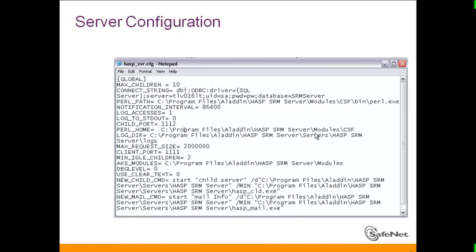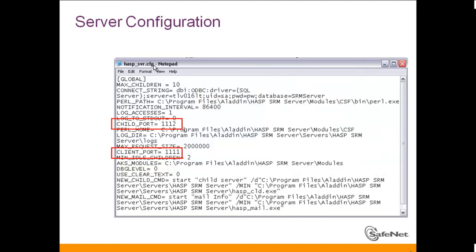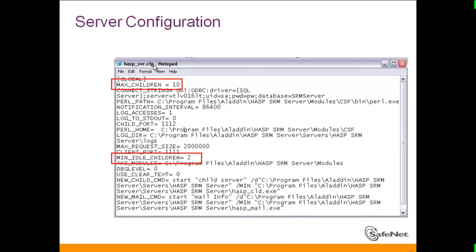The server configuration is in the ASP SVR CFG file, which resides inside the Business Studio directory. Key settings include the debug level, which is zero by default but can be changed to four for more detailed information. There are also port settings used by the child port and the client port, and these are mostly different from each other.